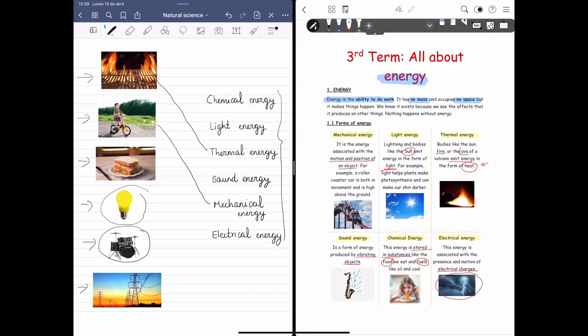The sandwich, it's the chemical energy. Remember here, we have seen that this energy is stored in substances such as food, and it's the one that later allows us to play. Here, we've got a light bulb and it's light energy. It produces light.